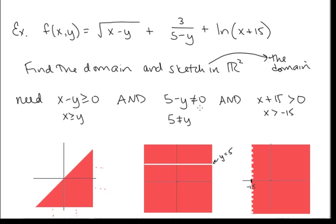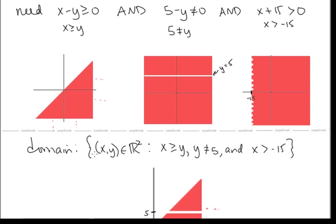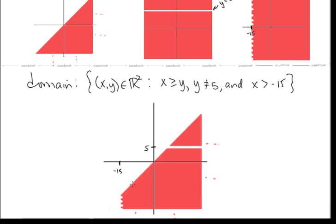At the same time, 5 − y ≠ 0 means y ≠ 5, so we exclude the entire horizontal line y = 5. And x + 15 > 0 means x > −15, so we shade everything to the right of the dotted vertical line x = −15. Putting these all together, the domain is the set of (x, y) in R² such that x ≥ y, y ≠ 5, and x > −15.